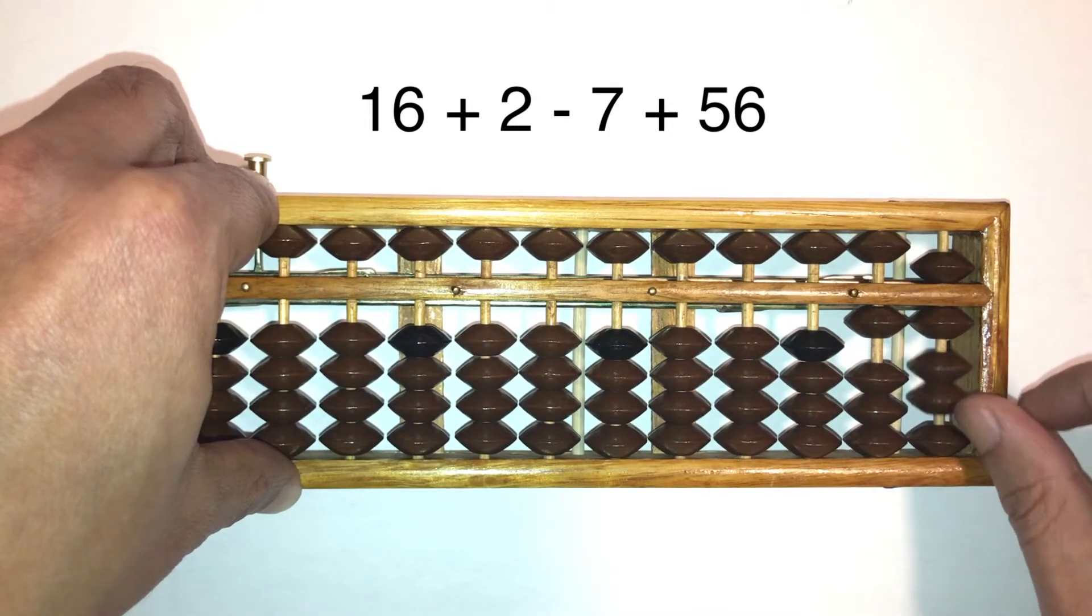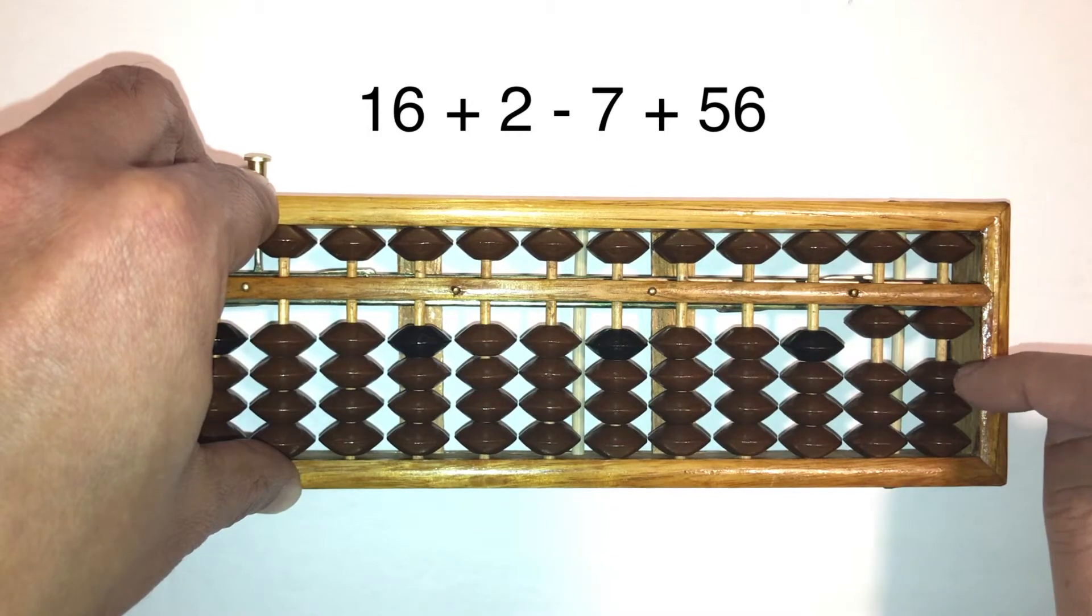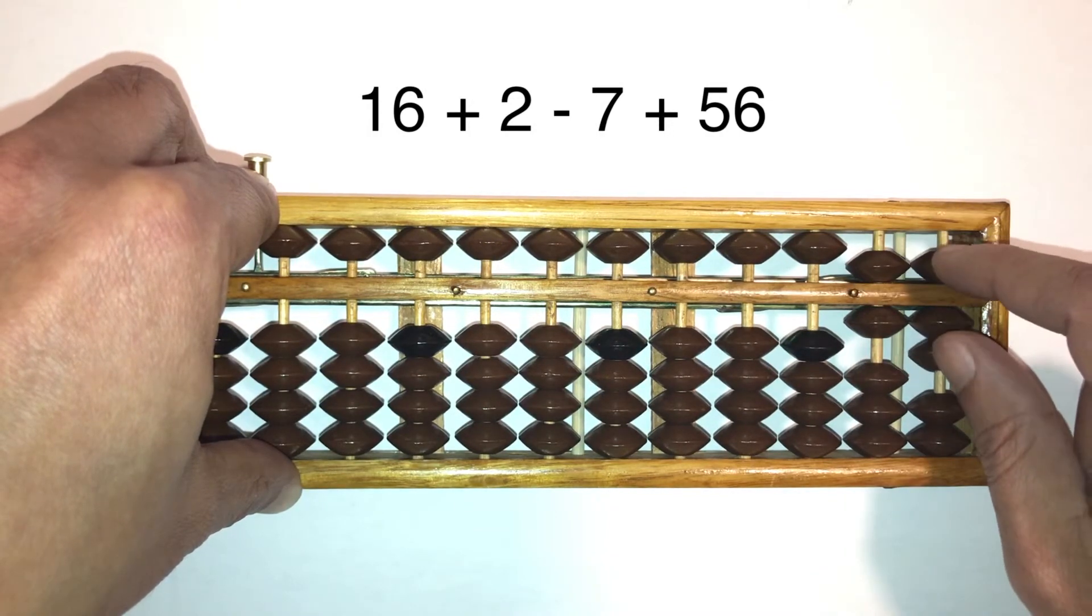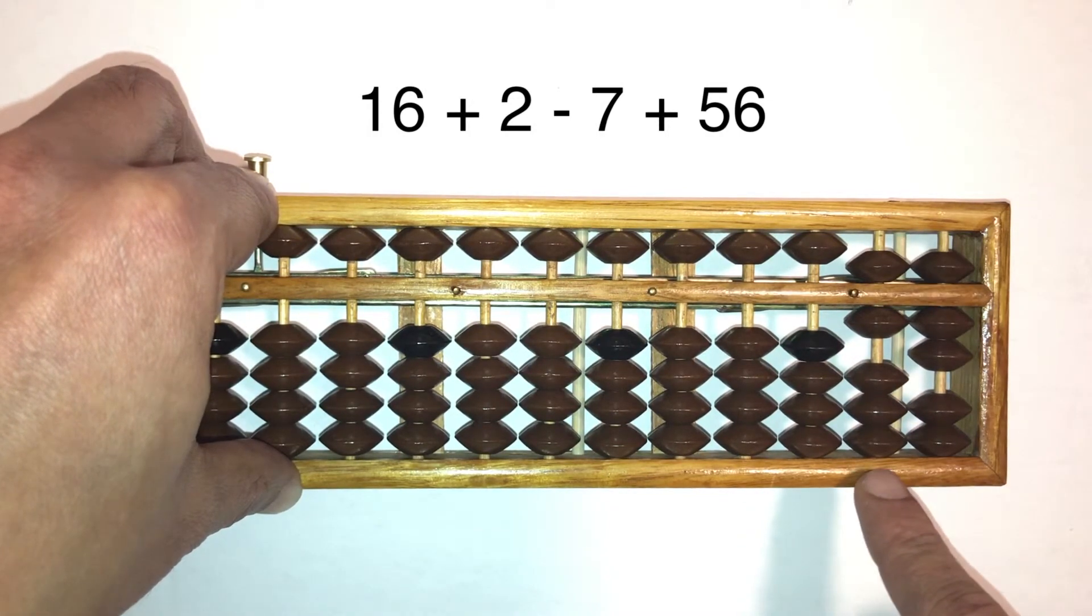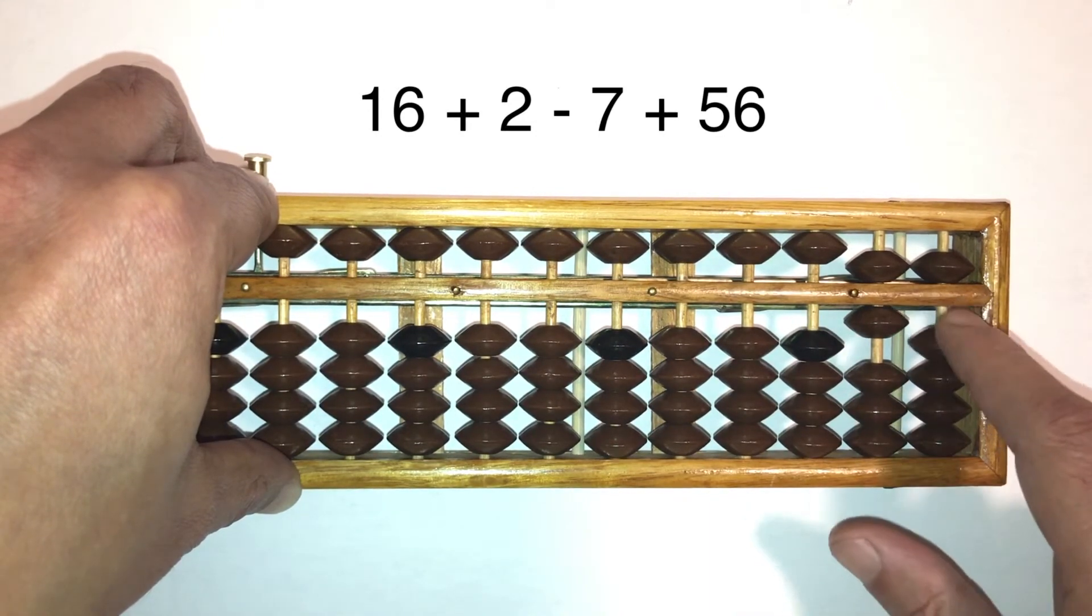16 plus 2 minus 7 plus 56. Answer is 67. Alright.